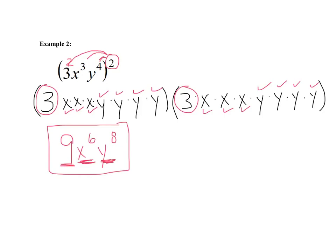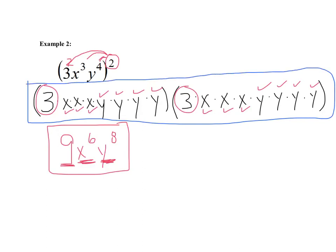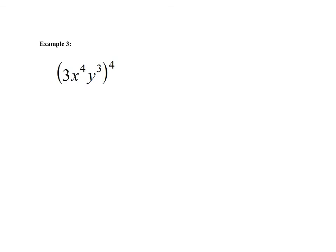It's smart to write it all out so you understand what's happening, and then look for the shortcut: distribute the outer power to everything in the parentheses — to your coefficient and then to each variable. For this last example, we have 3 times x to the fourth times y to the third, all raised to the fourth power. I'm going to look for that pattern and distribute this exponent to my constant, then to my x variable, and then to my y variable.